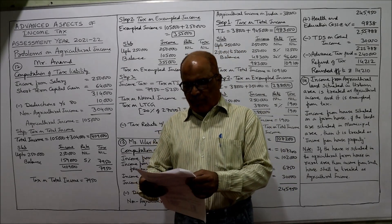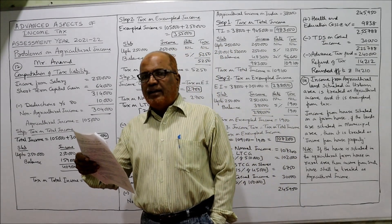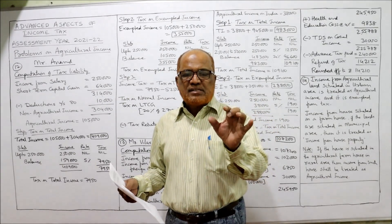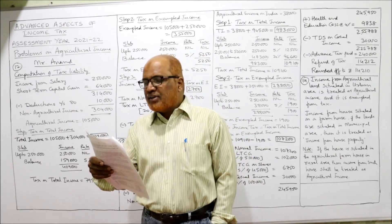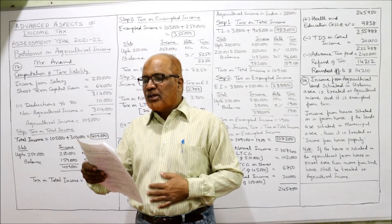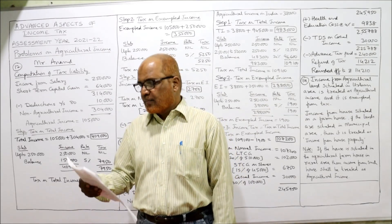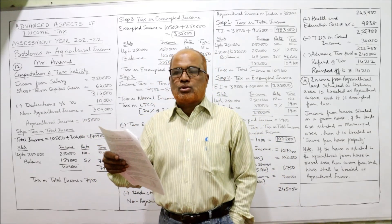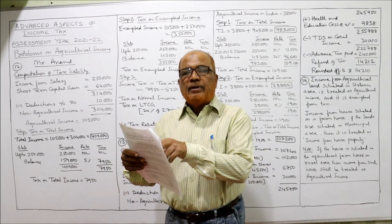I am starting problem number 12. Mr. Anand is a resident individual of 55 years of age — 55 years means non-senior citizen, so the basic exemption limit is 2,50,000. Mr. Anand submitted the following particulars related to the previous year. Calculate his tax liability and tax due for the current assessment year 2021-22. Income from salary: 2,50,000. Agricultural income: 1,05,000. He is having agricultural income and also non-agricultural income. Long-term capital gain is a special income on which 20% is the flat rate of tax.